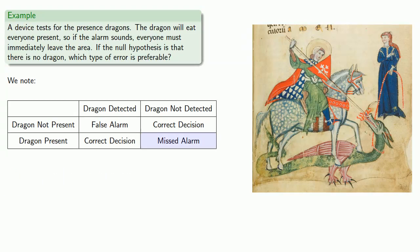Well, if we have a missed alarm, we don't detect a dragon when there actually is one. Since the dragon's going to eat everyone present, a missed alarm will cause people to be eaten.